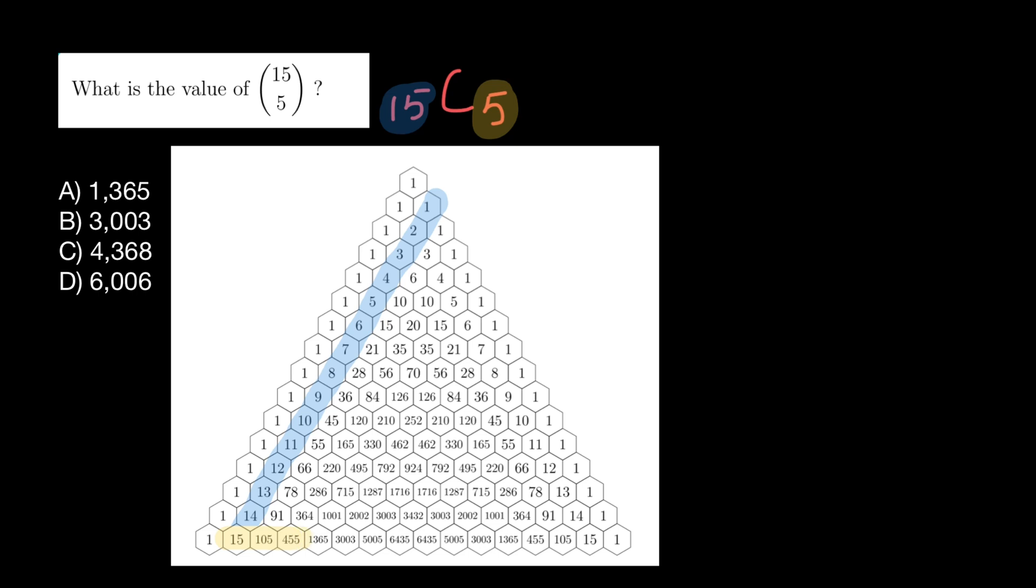And five here means that we have to move five places to the right. So one, two, three, four, and five. And this is, as you see, our answer, answer B.